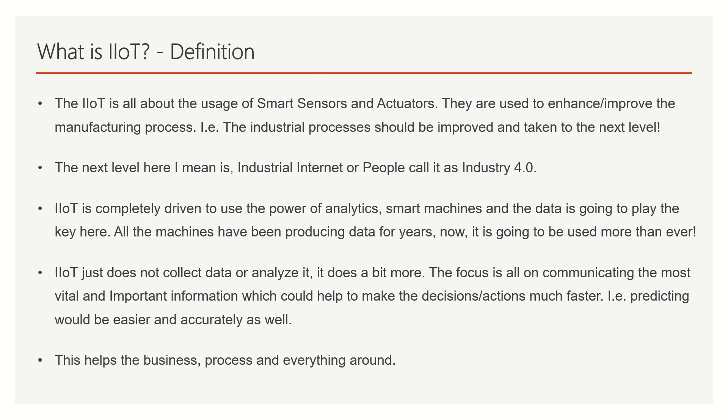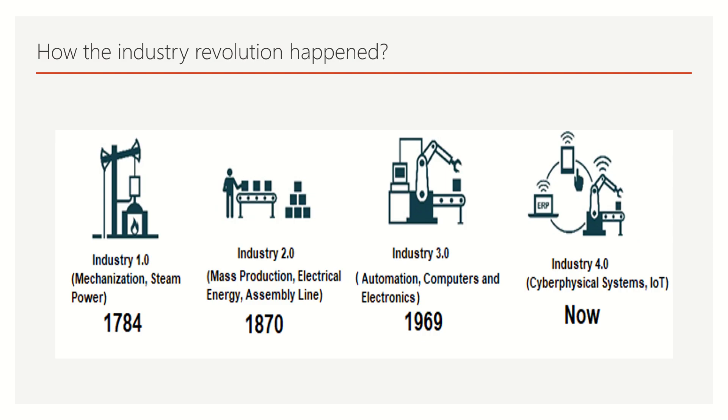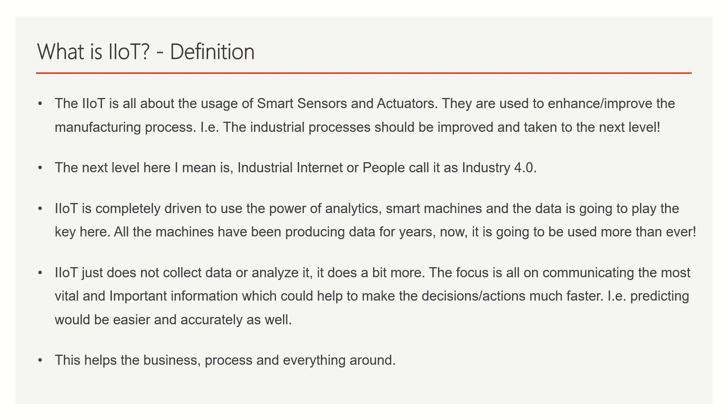What is Industrial IoT? IoT is all about the usage of smart sensors and actuators. I have sensors and actuators available, and they are smart. They are used to enhance or improve the manufacturing process — the industrial process should be improved and taken to the next level. That is the whole motto of Industrial IoT: the next level, which people call Industrial Internet or Industry 4.0, a cyber-physical system-based or Industrial IoT-based industry revolution.